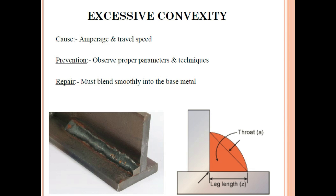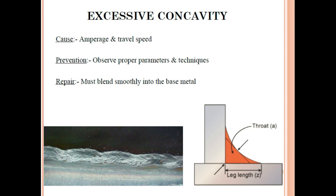Excessive convexity occurs when amperage and travel speed are not properly controlled — the weld looks convex, like a 'V' shape. Prevention: observe proper parameters and technique. Repair: blend smoothly into the base metal. Similarly, excessive concavity — which looks like a 'C' shape — also results from improper amperage and travel speed. Both require proper parameter control. An unskilled welder will struggle to control amperage and travel speed properly.